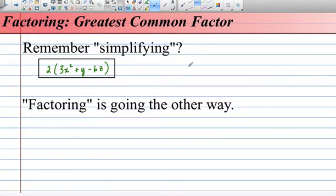In this video we'll go through how to factor by finding the greatest common factor. Simplifying means distributing the 2 into the bracket. So what we're left with here is 2 times 3x squared which is 6x squared plus 2y minus 12z.